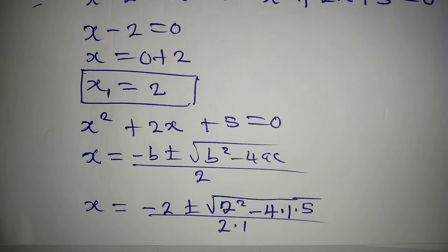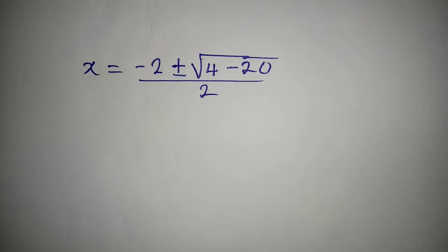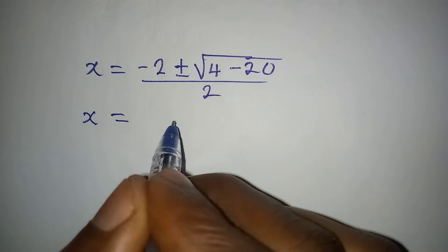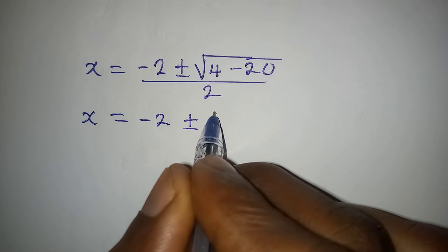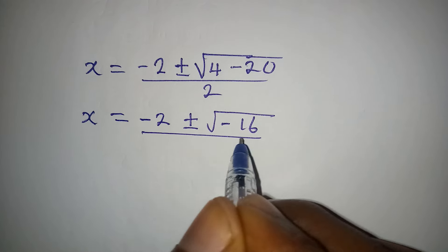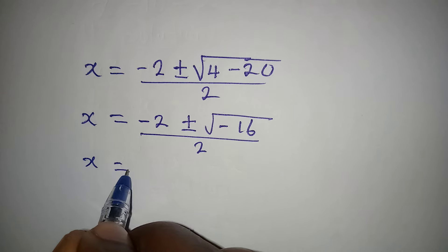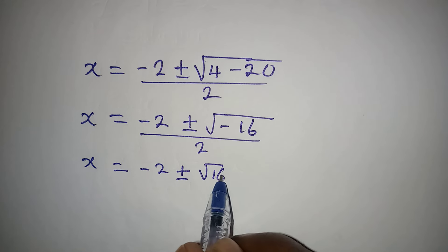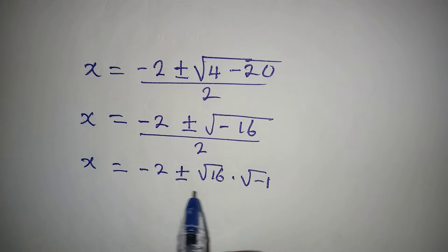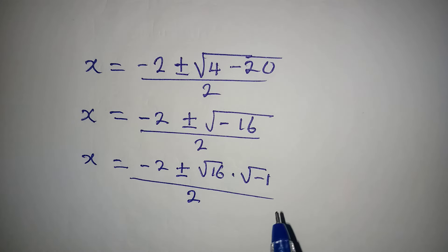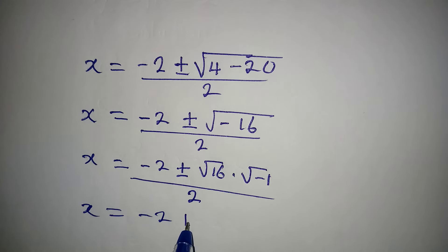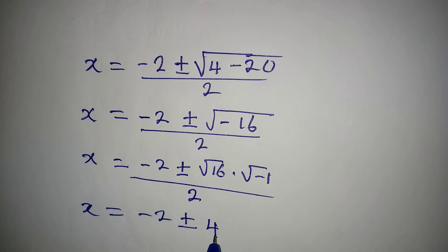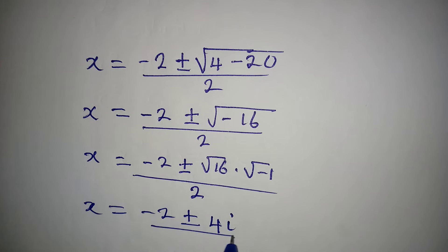Substituting into the formula: x equals minus 2 plus or minus square root of 2 squared minus 4 times 1 times 5, all over 2 times 1. This gives x equals minus 2 plus or minus square root of negative 16, over 2. We can write square root of negative 16 as square root of 16 times square root of negative 1, over 2.